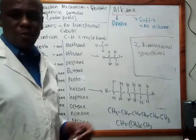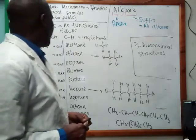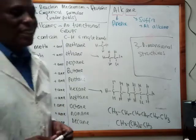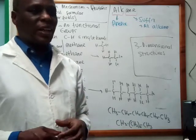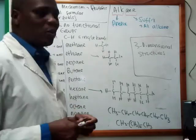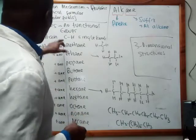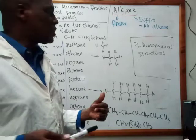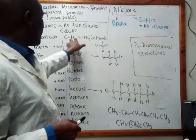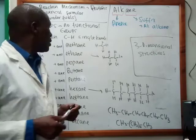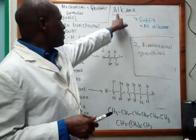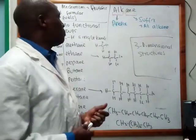For now, I want to move ahead to the lecture on alkanes, which are called saturated hydrocarbons. When we talk about the next functional group — alkanes — you'll understand what saturated hydrocarbons means: there is no double bond or triple bond. They all contain carbon-hydrogen single bonds.